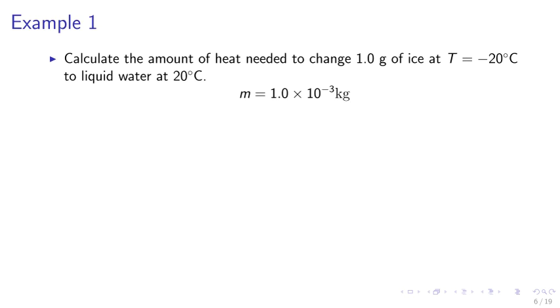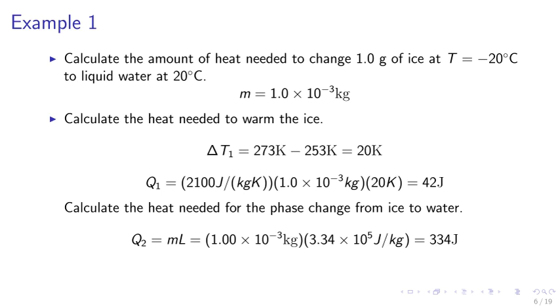Example 1. Calculate the amount of heat needed to change one gram of ice at T equals negative 20 Celsius to liquid water at T equals 20 degrees Celsius, where the mass of the water is 1.0 times 10 to the minus three kilograms. We may calculate the heat needed to warm the ice. We can calculate the delta T, which is 20 Kelvin. Calculate the heat transferred, which is 42 joules, and we may calculate the heat needed for the phase change from ice to water, which is Q2 equals mL equals 334 joules.